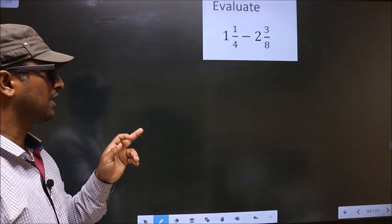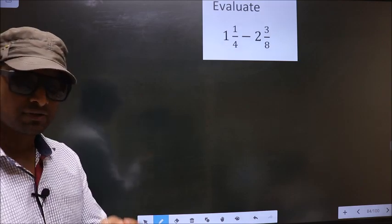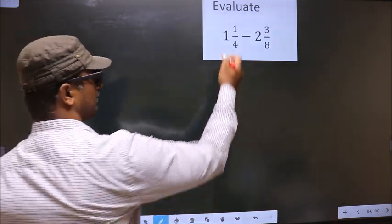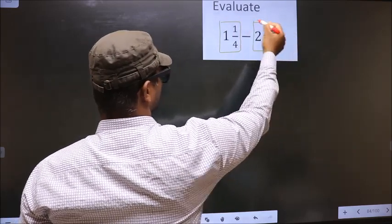Evaluate 1 1/4 minus 2 3/8. First, we should convert these mixed fractions into improper fractions.